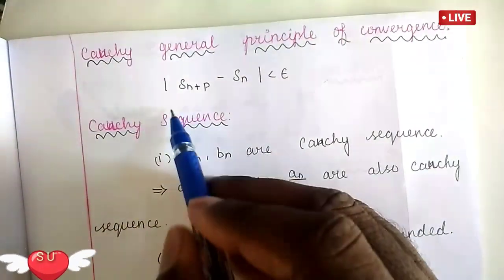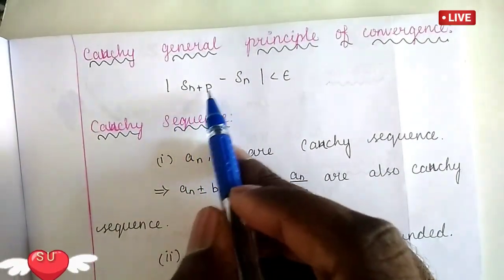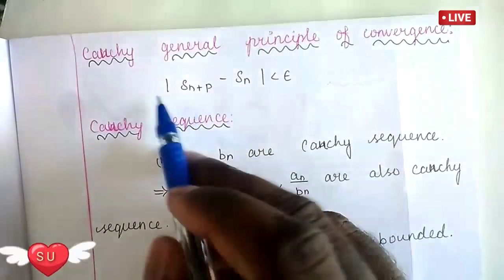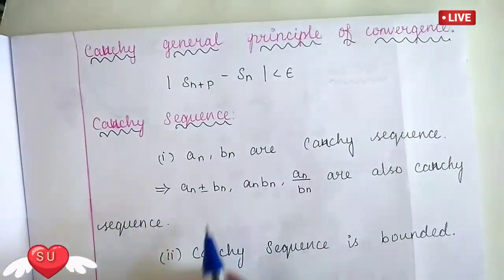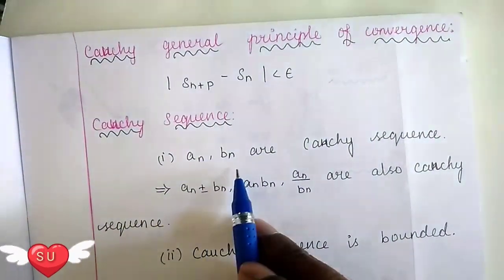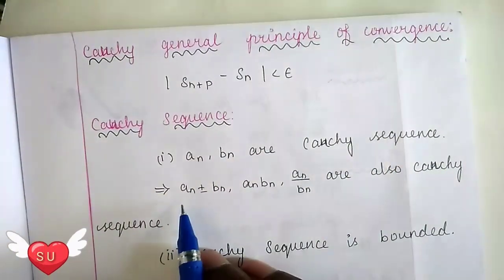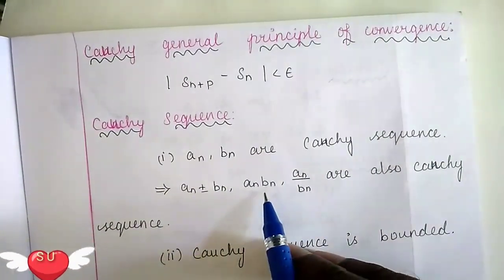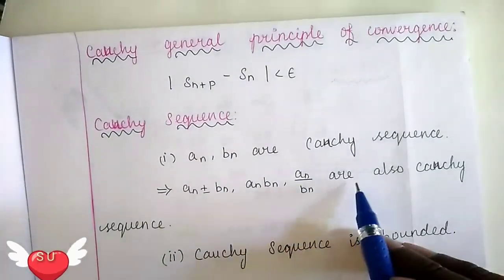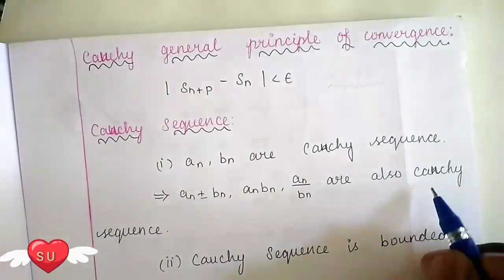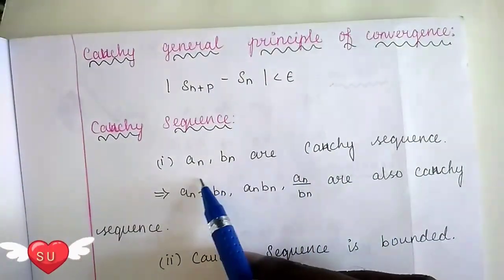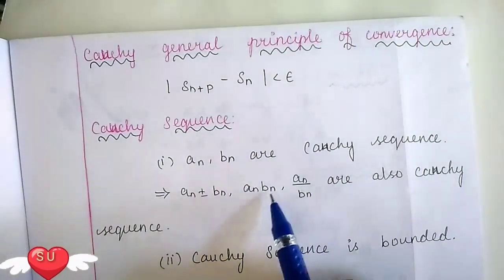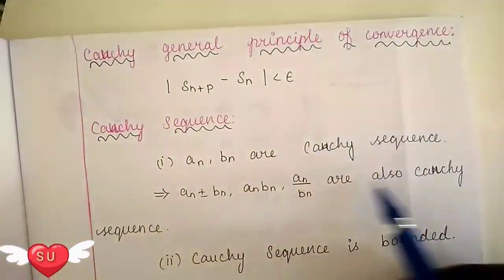We will talk about this method: |SNP - SN| less than R. We will also talk about an, bn, an plus or minus bn, an, bn, an divided by bn — multiplication and divisions of sequences.